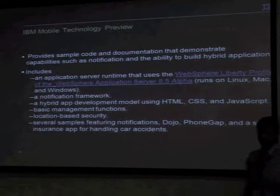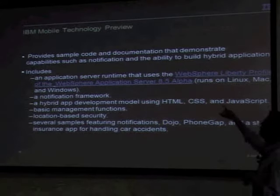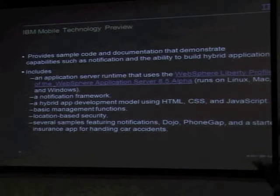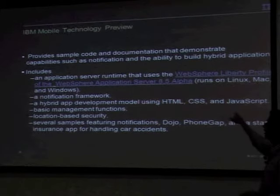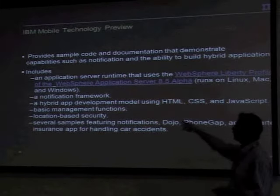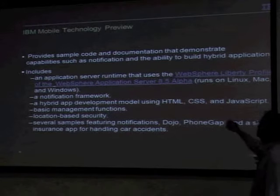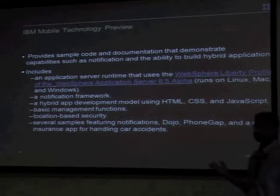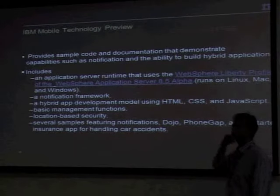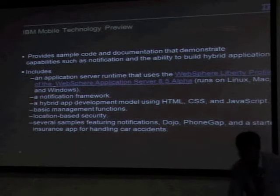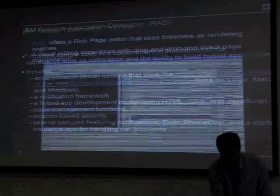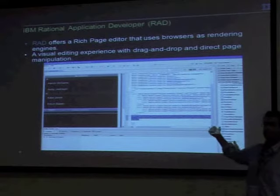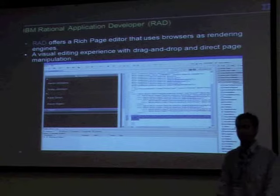Something that recently came out is the Agile Mobile Technology Review, which provides sample code and documentation demonstrating capabilities such as notifications and building hybrid applications. It includes an application server, notification framework, and examples on hybrid app development using HTML, CSS, JavaScript, and PhoneGap. You can download it for free, deploy the samples on a server, test them using Ripple, and it is a good starting point if you want to learn. Search for 'Agile Mobile Technology Review' or find the link at the end of this presentation.